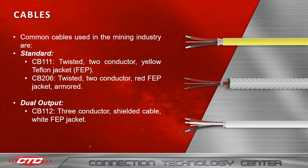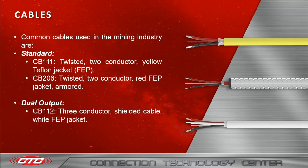The CB-206 is a twisted two-conductor red FEP jacket that is armored. As for the dual output cabling, we have the CB-112, which is a three-conductor shielded cable with a white FEP jacket.